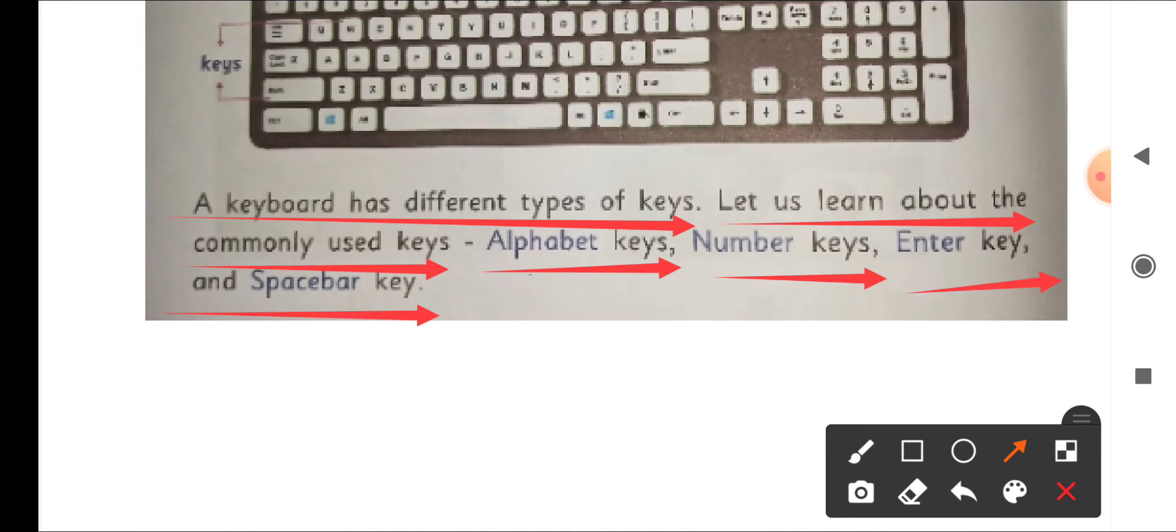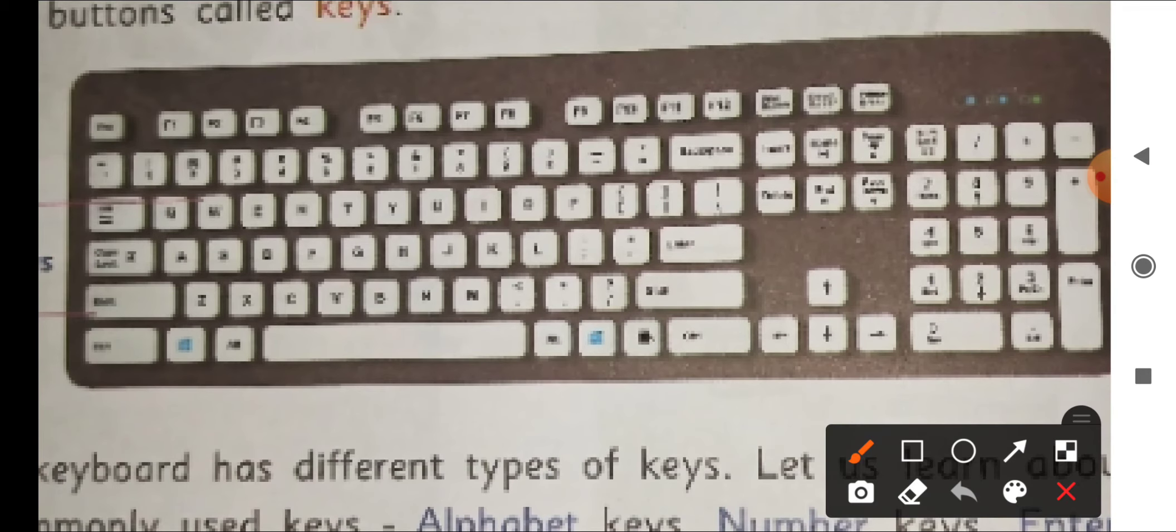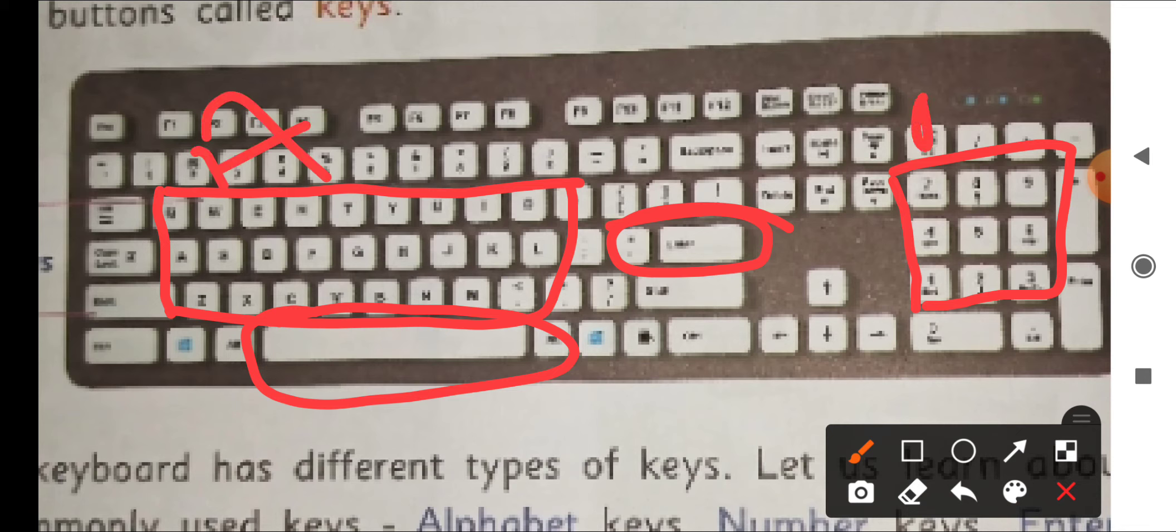So it is said that this is the keyboard, it has different types of keys like alphabet keys where A B C D is written, that is the alphabet keys. Then you can see numbers are written, these are number keys. This one is enter key, and this one is spacebar key.